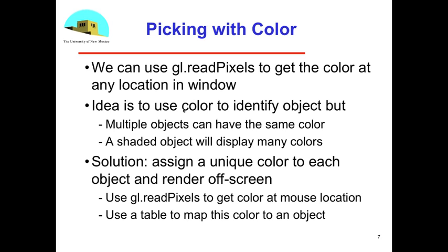Well, here's a simple solution, is if I can do a rendering that I don't see, I can do a second rendering with a unique color assigned to each object. Now I can use read pixels to get a unique color for each object at the mouse location.